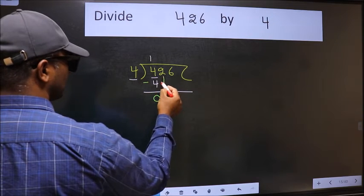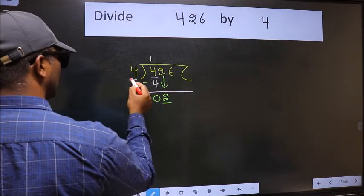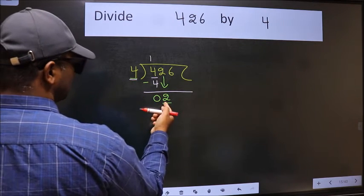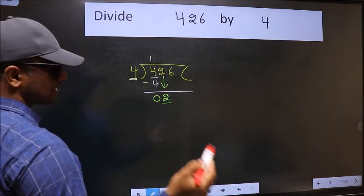After this, bring down the beside number, so 2 down. Now here we have 2 and here 4. 2 is smaller than 4, so we should bring down the second number.